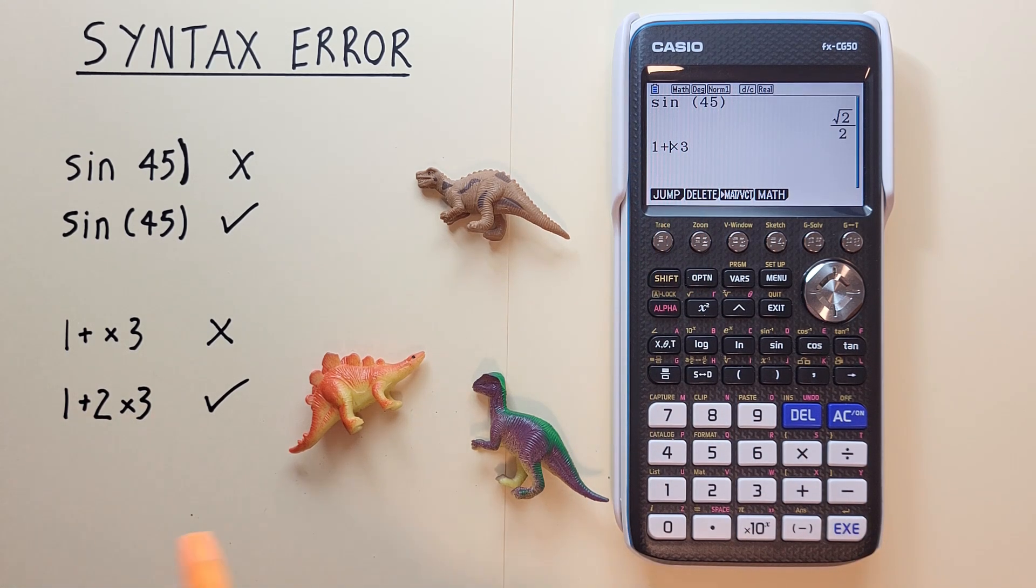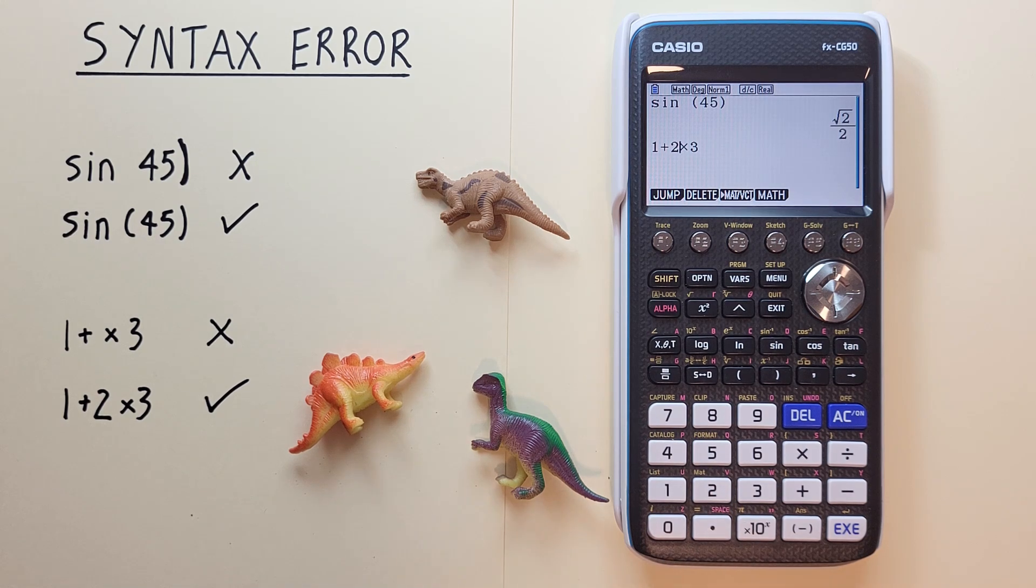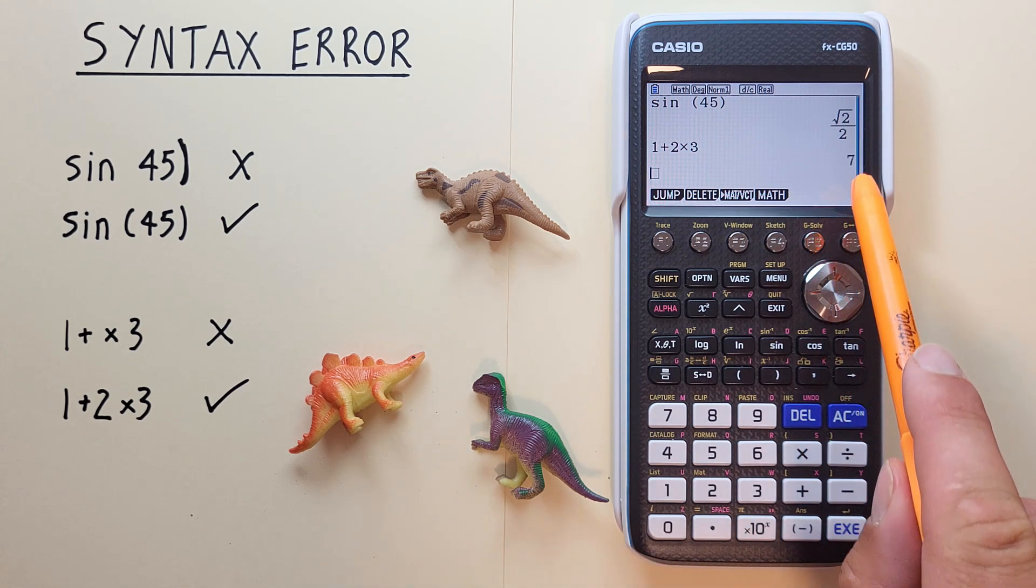So now if we enter something like a 2 in there that should solve our syntax error and if we hit exe now we see we get a result.